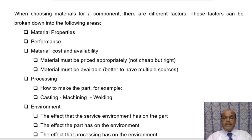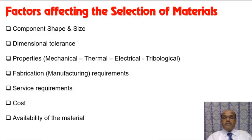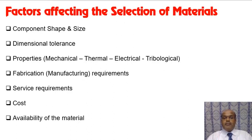Under material cost and availability, the material must be priced appropriately and must be available. Factors affecting the selection of material include component shape and size, dimensional tolerance, properties such as mechanical, thermal, electrical and tribological, fabrication requirements, service requirements, and cost and availability.